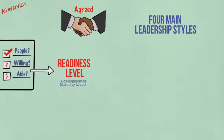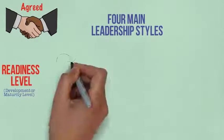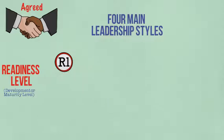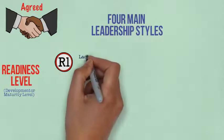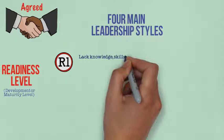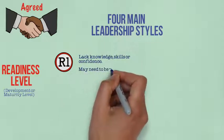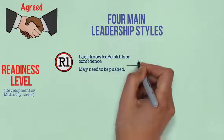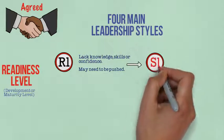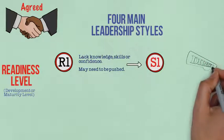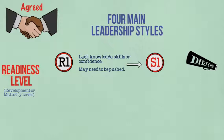Let's look at the right leadership style for each of the four readiness levels. So R1: these are colleagues who lack the knowledge, skills, or confidence to work on their own and they often need to be pushed to take the task on. They need directing, so S1. Here leaders tell their people what to do and how to do it.